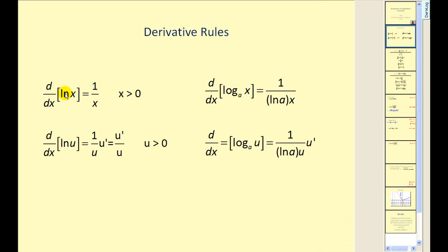Here are our rules. The derivative of natural log x is equal to 1 over x. For a composite function, the derivative equals 1 over u times u prime. If we have the derivative of a logarithm with a base other than e, the derivative of log base a of x equals 1 over (natural log a times x). Notice a is our base. And if we have a composite function involving a logarithm, here's our derivative formula.